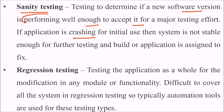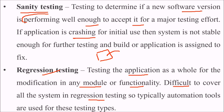Regression testing — if you have certain code and you add something, that addition may introduce certain errors. So regression testing is testing the application as a whole after modification of any modular functionality. If you have changed or added certain functionality, you run regression testing. It is difficult to cover all the system in regression testing, so typically automation tools are used for this type of testing.